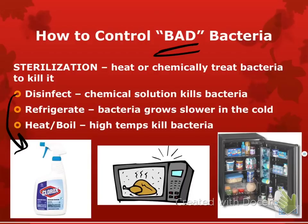Sterilization is another way to control bad bacteria. If you heat or chemically treat bacteria, you will kill it — like Lysol wipes or hand sanitizer. Refrigerating food slows bacterial growth — that's why leaving pizza out leads to more bacteria than if you put it in the fridge. Boiling and high temperatures kill bacteria, which is why it's really important to fully cook your chicken so you don't get food poisoning. And that's all on bacteria.